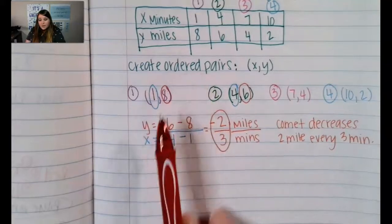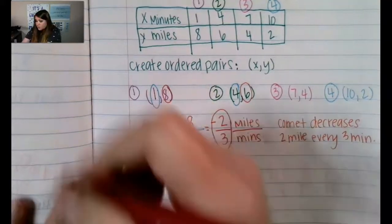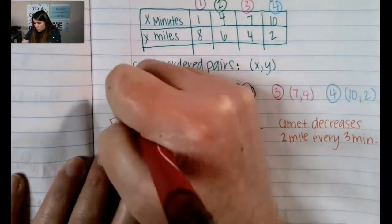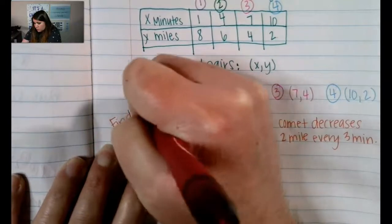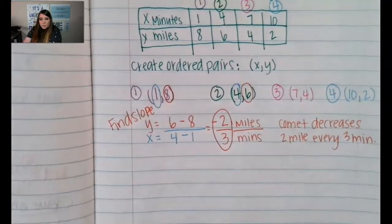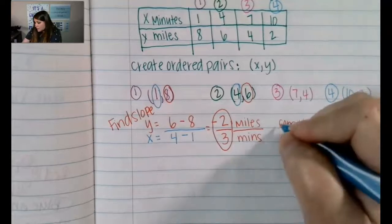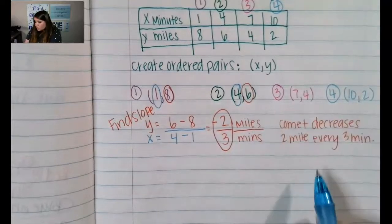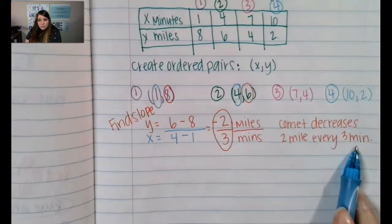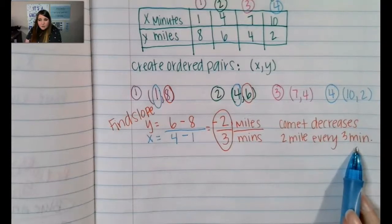So what we've done is taken the ability to make ordered pairs, then found the slope. Over here we talk about what this means in the real world. We've answered the question: the comet decreases two miles every three minutes.